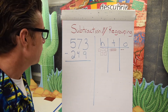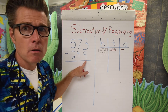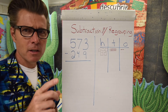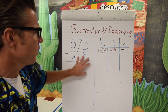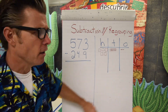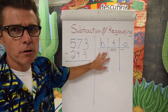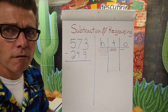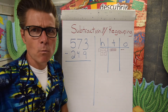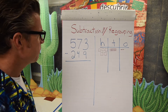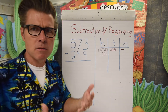We have a subtraction problem here. We have 573 and from that we will be taking away 249. I've broken out each place value to figure out what we currently have. With the five in the hundreds place we have five hundreds, represented by little squares. Our tens place is represented by seven tens, and in the ones place we have three ones. In subtraction we start with the ones place and move to the tens, then to the hundreds.